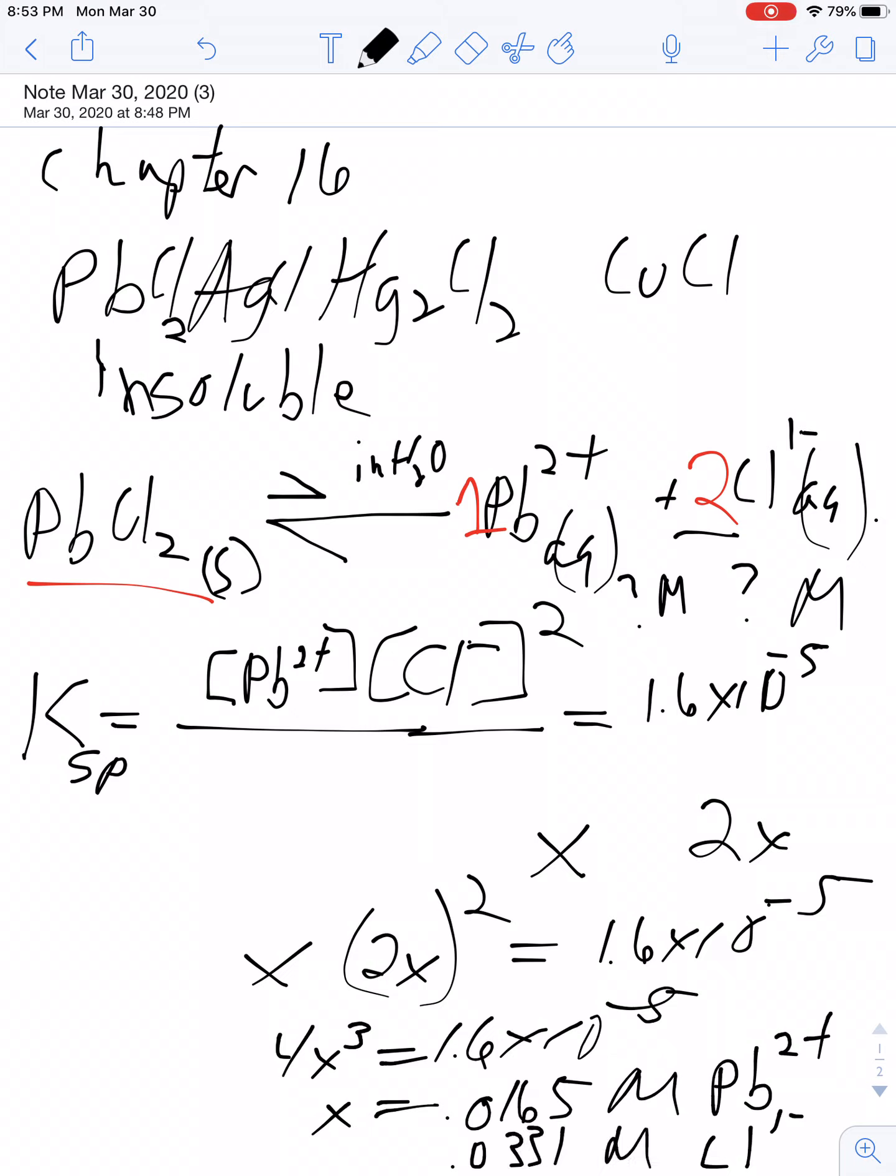So this is a way you can calculate concentrations of substances that don't dissolve in water. Lead chloride does not dissolve in water - only a very small amount does. So that's basically half the problems in Chapter 16.